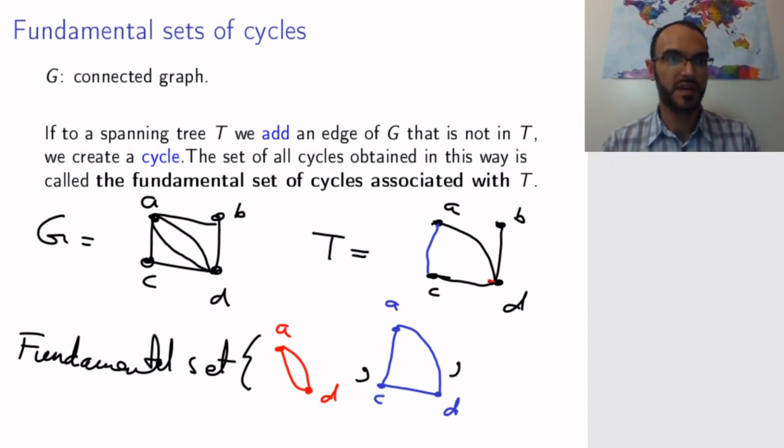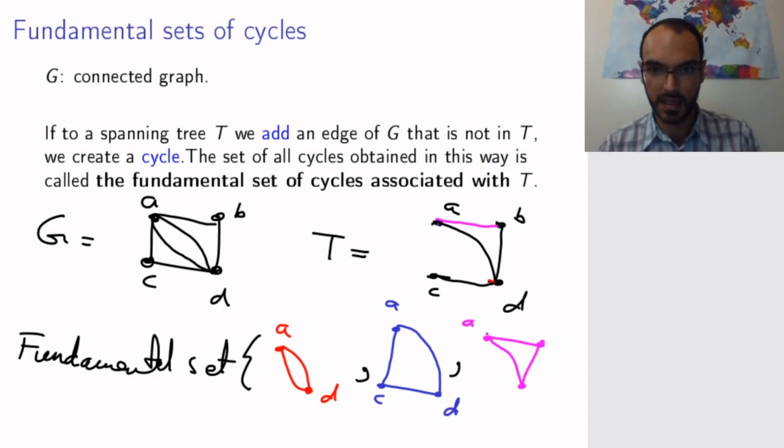What other edges do I have that I can add? So, let's forget about the blue edge. Let's add this edge. And then I get a cycle A, B, D. And that is it, right? So, these are the cycles that I get by adding one at a time, each time, the edges that I remove to construct a tree. Note that you might say, okay, but maybe why didn't you add the edge between C and B? Well, because there is no edge between C and B. I'm only allowed to add edges that were actually in the original graph.